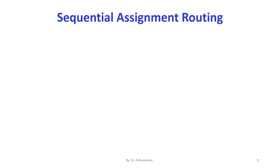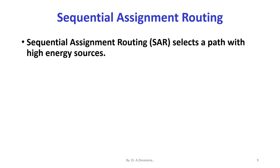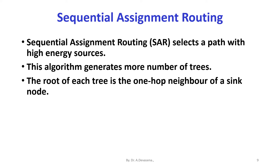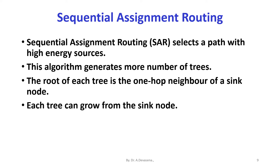Sequential assignment routing selects a path with high energy sources. The algorithm generates more number of trees, where the root of each tree is the one-hop neighbor of a sink node. Each tree can grow from the sink node. This algorithm removes nodes which have high delay and low throughput, and some nodes may attach with more than one tree.